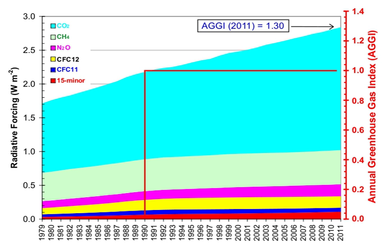The major non-gas contributor to Earth's greenhouse effect — clouds — also absorb and emit infrared radiation and thus have an effect on greenhouse gas radiative properties. Clouds are water droplets or ice crystals suspended in the atmosphere.